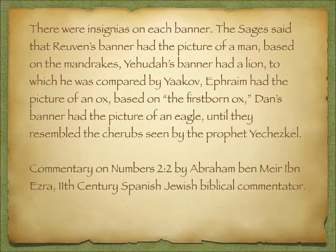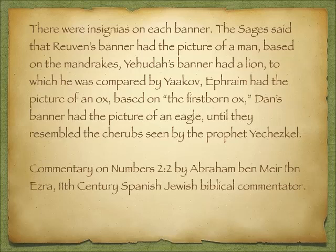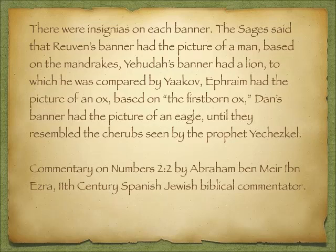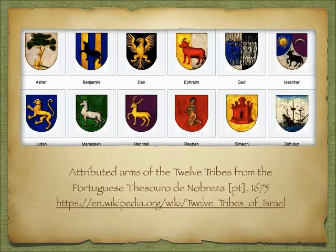From an 11th century commentary on Numbers, this is written: 'There were insignias on each banner. The sages said that Reuben's banner had the picture of a man, based on the mandrakes. Judah's banner had a lion, to which he was compared by Jacob in the prophecy. Ephraim had a picture of an ox, based on the firstborn ox from Moses' prophecy. Dan's banner had a picture of an eagle.' Here we see a rendering of this commentary showing Ephraim as the bull, Reuben as a man, Judah as the lion, and Dan as the eagle.